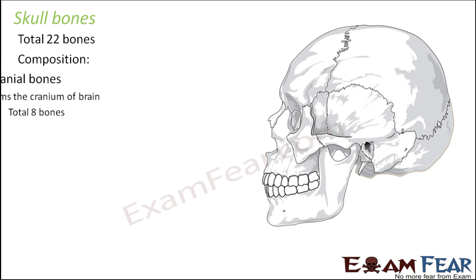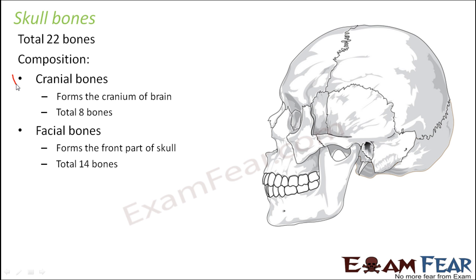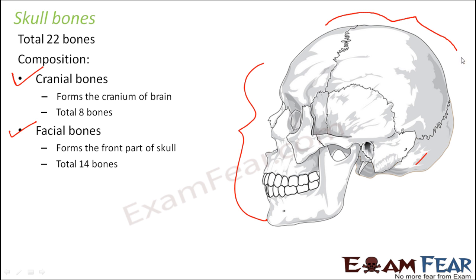These skull bones are made up of two types: cranial bones and facial bones. Cranial bones form the cranium — that upper protective part encasing the brain. There are a total of eight cranial bones. Facial bones form the front part of the skull, and there are 14 facial bones.